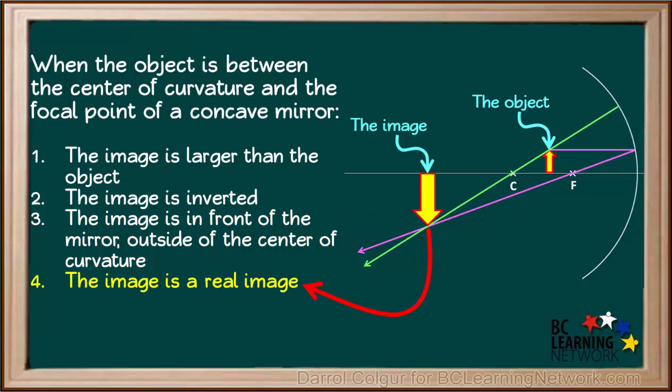Lastly, because the image is formed when two solid rays actually cross, it is a real image. If the sensor of a digital camera is placed at this location, the image would be recorded.